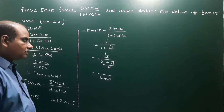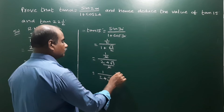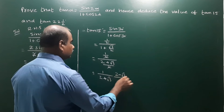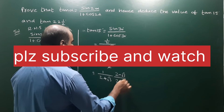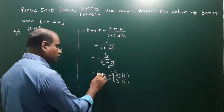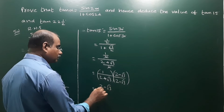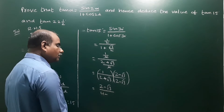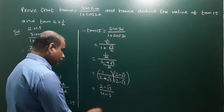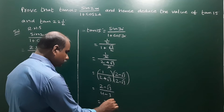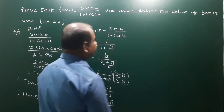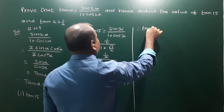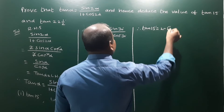We have to rationalize the denominator. Multiply numerator and denominator by the conjugate (2 − √3). The numerator becomes 2 − √3, and the denominator becomes 2² − (√3)² = 4 − 3 = 1. Therefore tan 15° = 2 − √3.